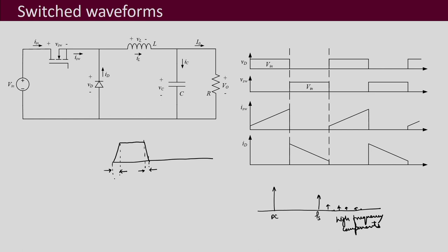Here you see that the voltage is building up — that means the device is turning off — and this is the turn-on time. Similarly, when you look at the current, the current also will take some finite time to rise and to fall. When you do the FFT of these, it will be slightly different because the nature of the waveform is trapezoidal.